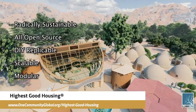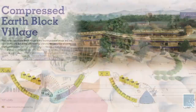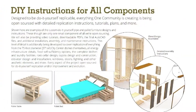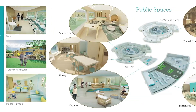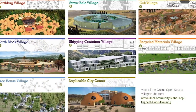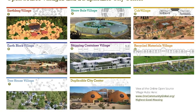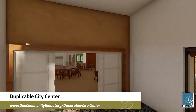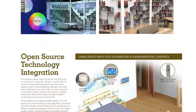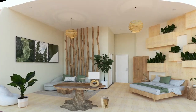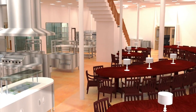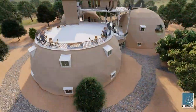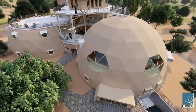The One Community approach to highest good housing is eco-artistic home building that is affordable, sustainable, do-it-yourself duplicable, resource and space efficient, and consists of seven different sustainably constructed village models. One Community is also creating an open source duplicable city center designed to be LEED Platinum certified, provide 12 guest rooms, dining for over 150 people, and laundry and recreation space for over 300 people — all while saving money, time, space, and resources.